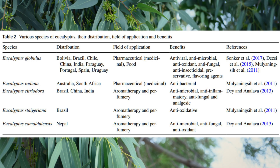Eucalyptus globulus has a major chemical of cineole, which makes up about 80%. Eucalyptus citriodora has a much higher concentration of pinene and citronella. 1,8-cineole, alpha-pinene, beta-pinene, and limonene are responsible for the antimicrobial properties, and 1,8-cineole also has the benefit of anti-inflammatory activity.